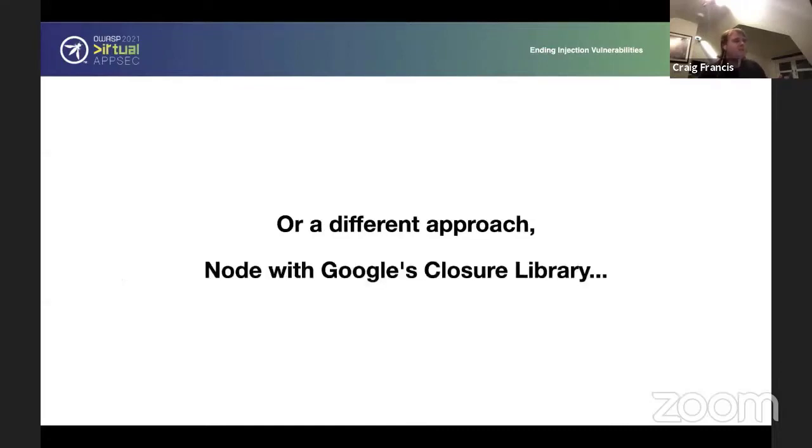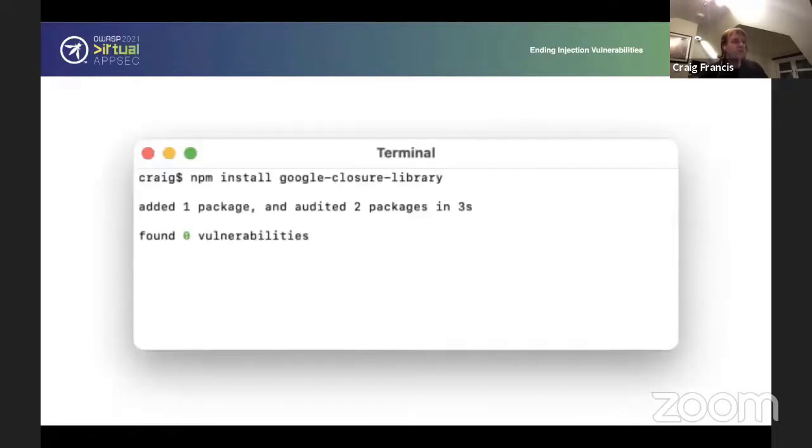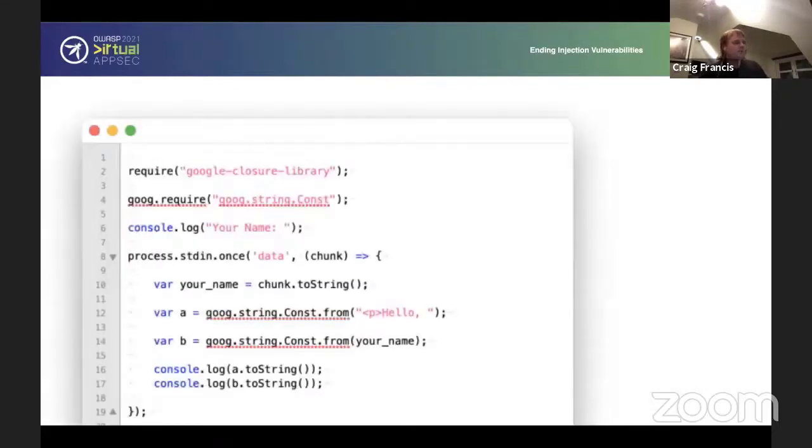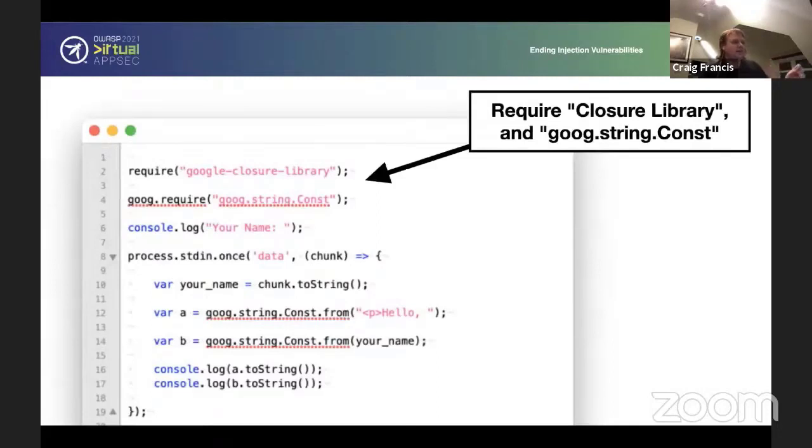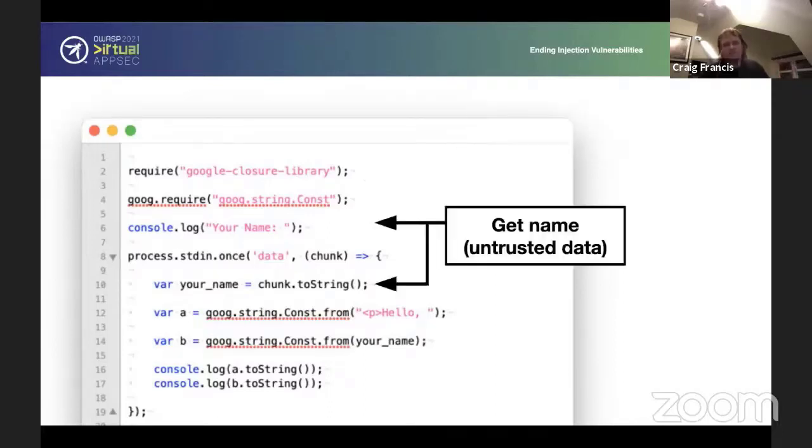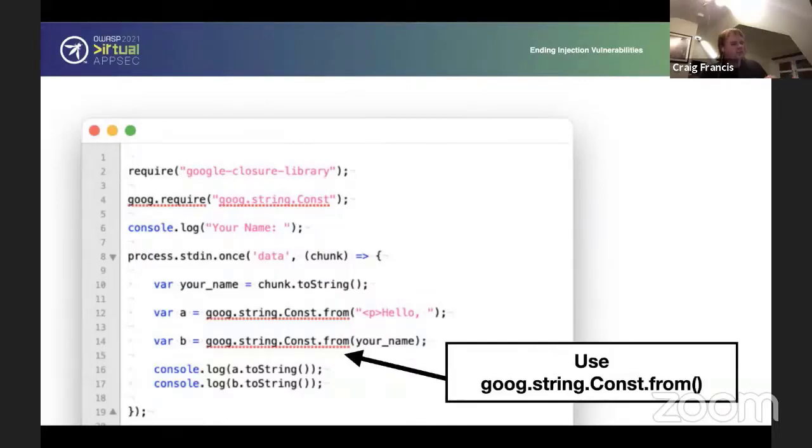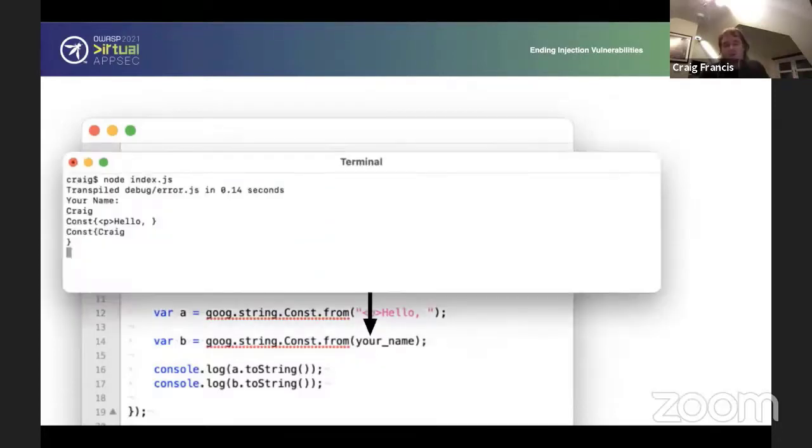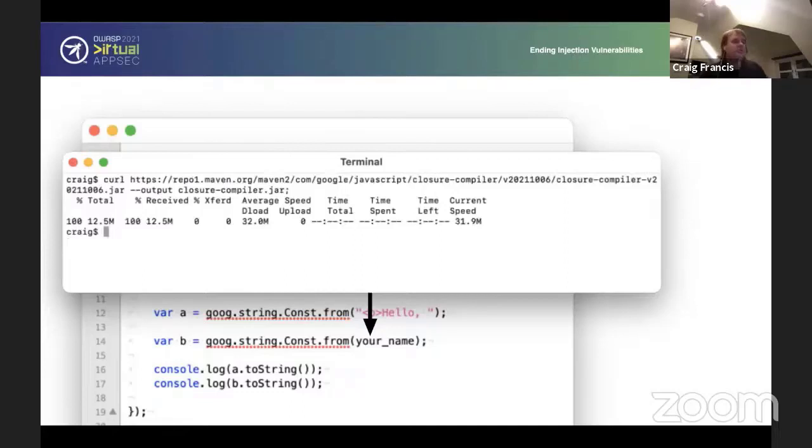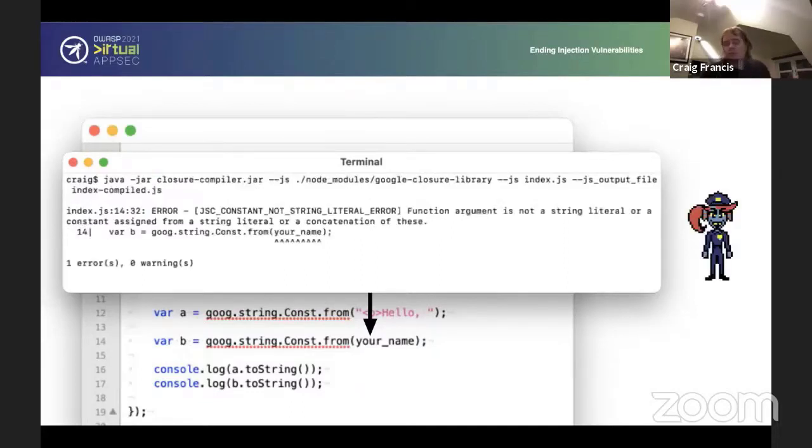So a different approach. Node also can use the Google Clojure library. First of all, you have to install it. And this one is basically, you require that library, and you include the goo.string.const thing. Here's our getting the name, being trusted data. And while using the goo.string.const from method, it will check that it has come from that it's actually a programmer-defined string. Now, if you just write it through Node normally, it does nothing. It actually makes no difference at all. But if you download the Clojure compiler, which is an extra step, and then you run that compiler, then it will reject that. So for example, in this case, it has identified the error on 9.14, and said it's not going any further.